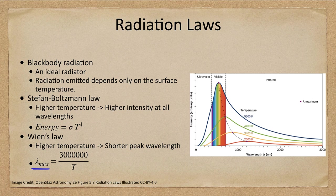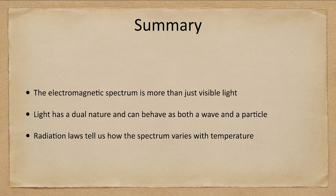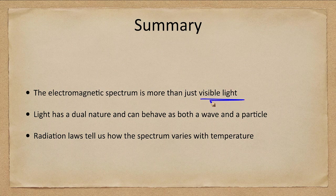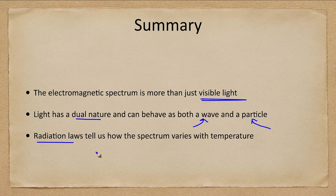So let's go ahead and finish up with our summary. And what we looked at was the electromagnetic spectrum, and it's more than just visible light. We looked at the dual nature of light and how it can behave as a wave and a particle. And we looked at the radiation laws that tell us how the spectrum can vary with temperature.